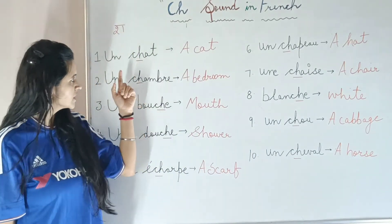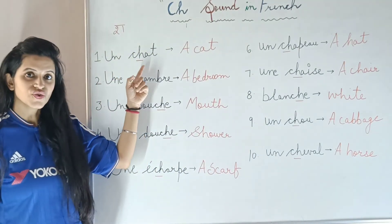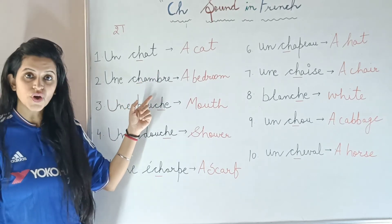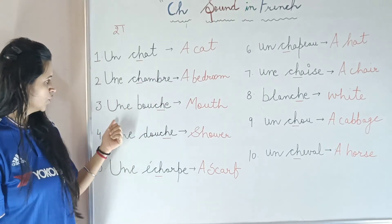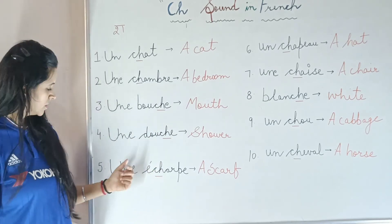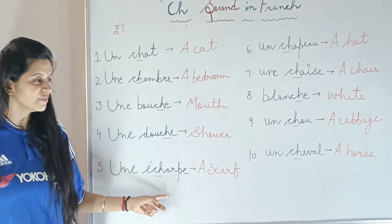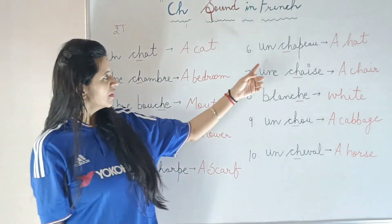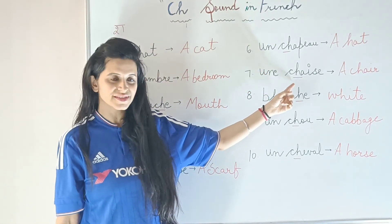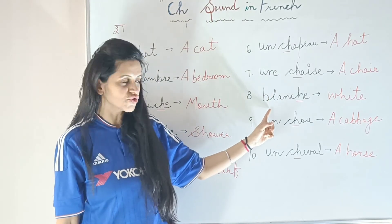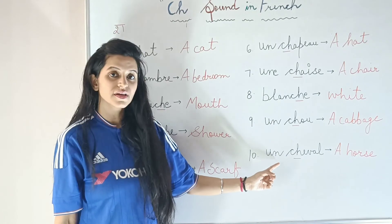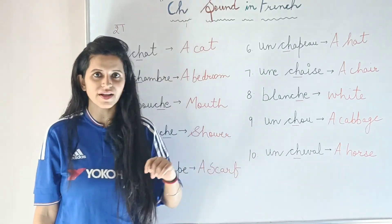Let's repeat all the words again: Un chat, une chambre, une bouche, une douche, une écharpe, un chapeau, une chaise, blanche, un chou, and the last word is un cheval.